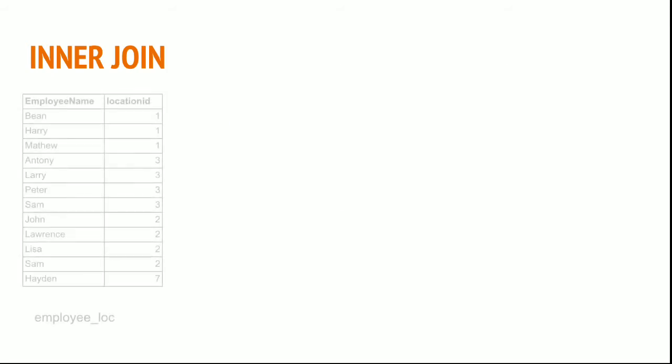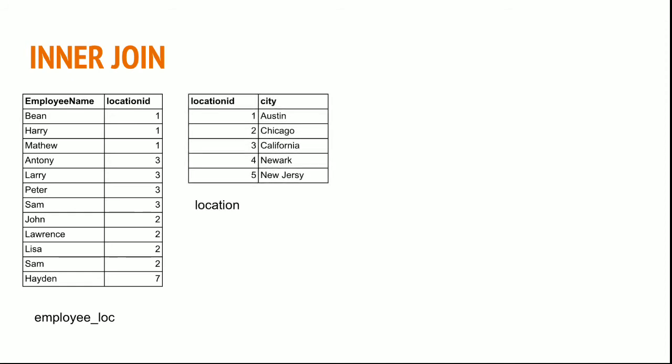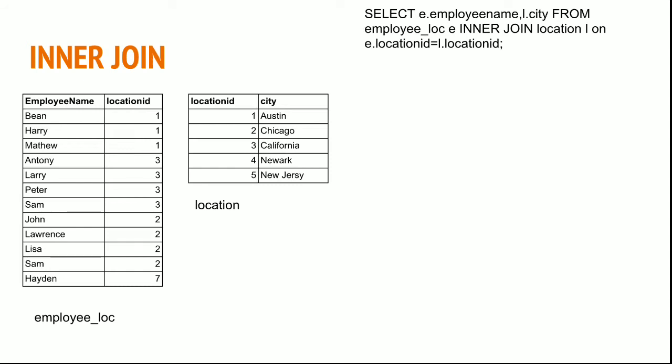Inner join: if I have an employee table and a location table, the common column in both tables is location ID. So I can join both tables using location ID and fetch the employee name and city using the following select statement: SELECT employee_name, city FROM employee INNER JOIN location ON location_id. With this statement the result would be the matching keys with location IDs 1, 2, and 3, because 7 is present in the employee table but not in location, whereas 4 and 5 are present in location but not in employee, so they will never be returned in an inner join.